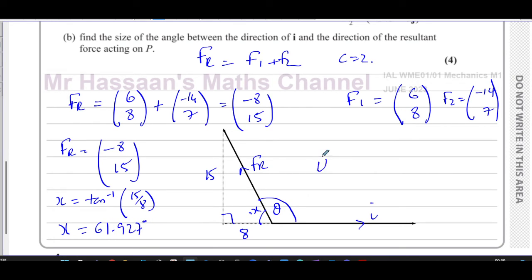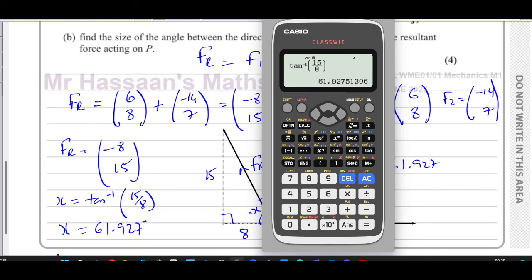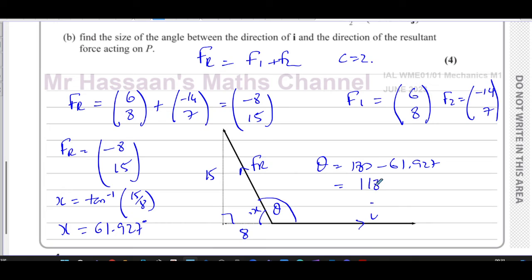So theta, therefore, is going to be, as they make a straight line, 180 minus 61.927. So we do 180 minus the answer, which gives us 118.072. It didn't tell us how to round it, so we do to one decimal place. So theta equals 118.1 degrees.